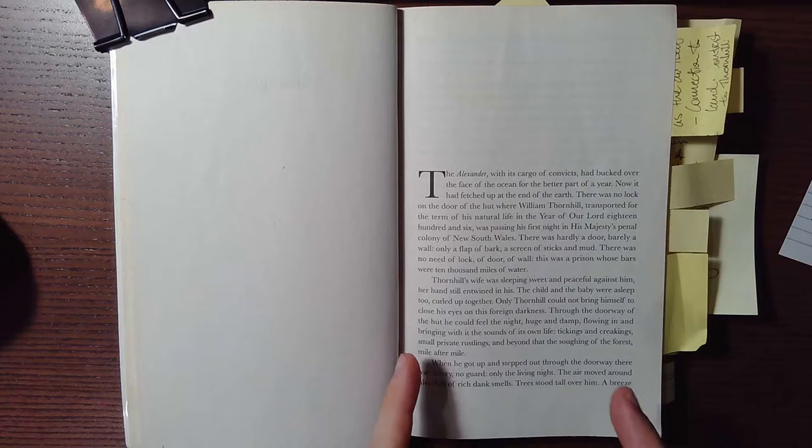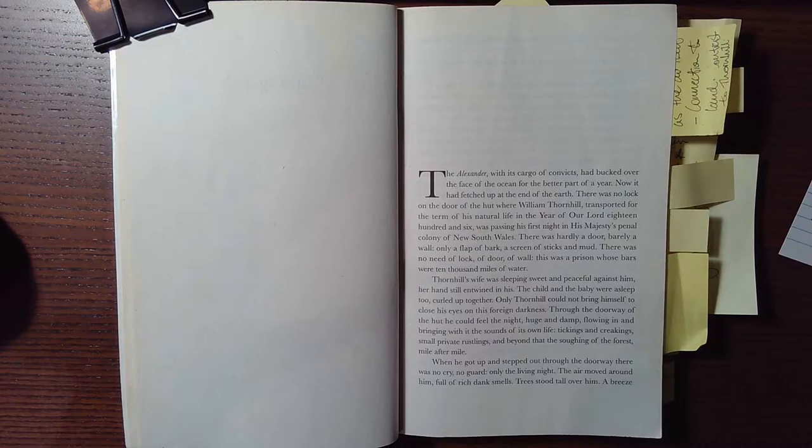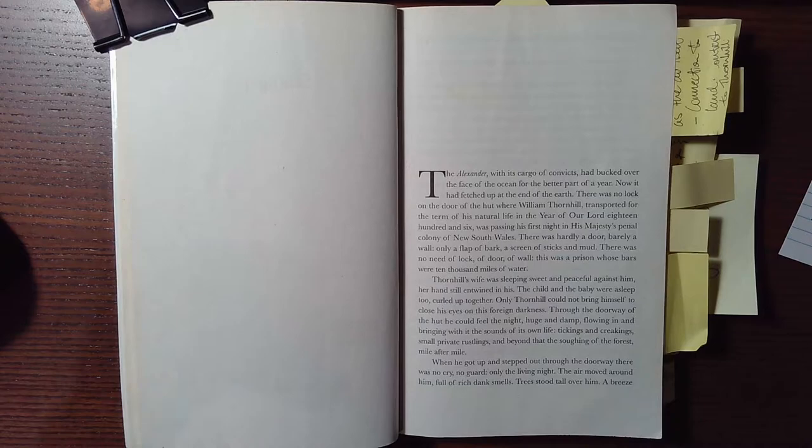Let's talk about the prologue to The Secret River called Strangers. So immediately before we read we know that this is going to set us up to have some kind of conflict, the idea of strangers and not knowing what's going on. So we're introduced immediately to the situation. The Alexander with its cargo of convicts, we're aware enough of Australia's history to know that this is set in that colonial time when England is bringing over convicts to Australia.